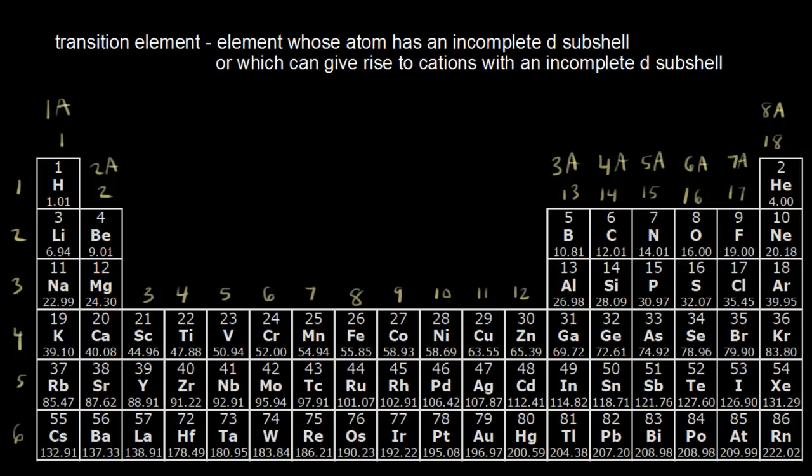In the last video, we saw the classification of elements into groups on the periodic table, and we stopped with the definition for a transition metal. There are two ways to think about transition metals.